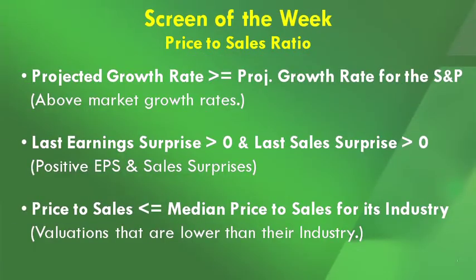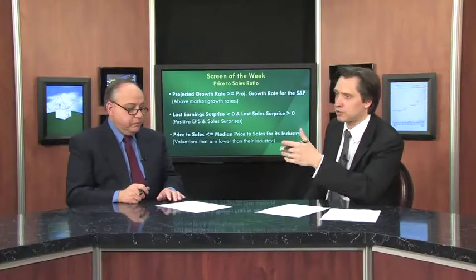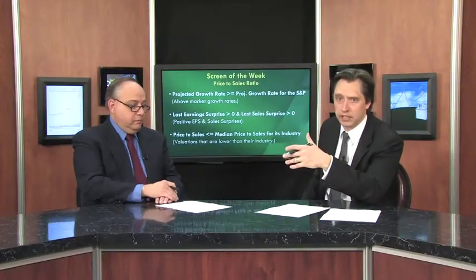The screen also requires companies to have a positive earnings surprise and a positive sales surprise their last time out. Then the price-to-sales metric is added — the ratio must be less than or equal to the median for its respective industry, so valuations must be lower than their industry peers. All parameters apply to companies where the price is above five dollars and volume is above 100,000 shares.